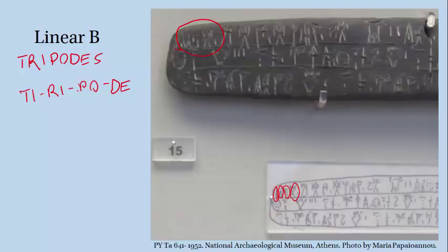Almost every symbol in the Linear B syllabary represents either a vowel by itself, or a consonant followed by a vowel. And that means that whenever you have a consonant sound that isn't followed directly by a vowel, like the T or the S sound in 'tripodes,' you have to do one of two things. You can add in an extra syllable — so we turned 'tri' into 'ti-ri.' Or you can leave out the consonant sound entirely, so we turned 'des' into just 'de' and didn't represent that S sound anywhere.